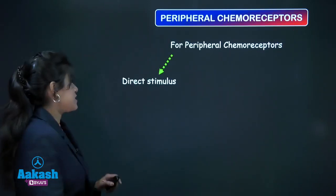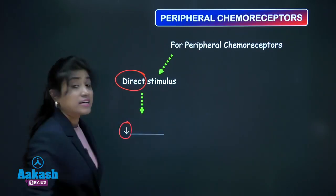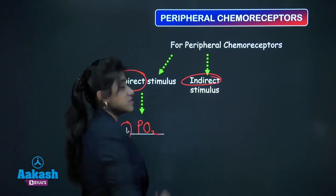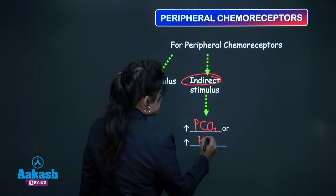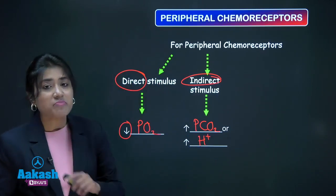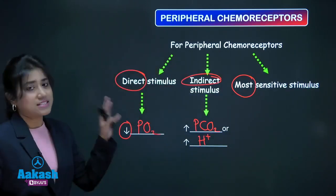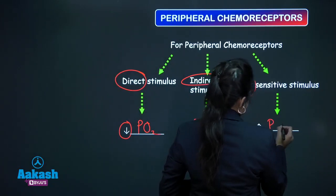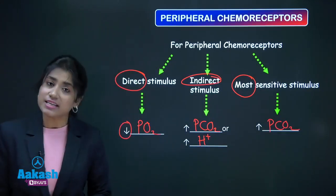For peripheral chemoreceptors, the direct stimulus is decrease in PO2 less than 60 mmHg. The indirect stimuli are increase in PCO2 or increase in H+ in blood. Among these, the most sensitive stimulus for activation of peripheral chemoreceptors is increase in PCO2.